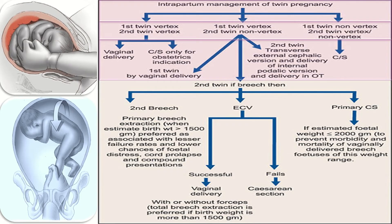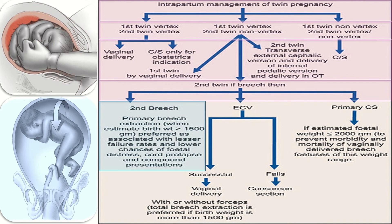If ECV or IPV are unsuccessful, we go for cesarean section. In the third possibility, when the first twin is non-vertex and the second is either vertex or non-vertex, we go for cesarean section. When the second twin is breech, we go for primary breech extraction when the estimated birth weight is more than 1500 grams, as it is associated with a lesser failure rate and lower chances of fetal distress, cord prolapse, and compound presentation. We can also go for ECV; if that fails, we proceed to cesarean section. If ECV is successful, vaginal delivery is performed. If the estimated fetal weight is less than 1500 grams, we go for primary cesarean section.